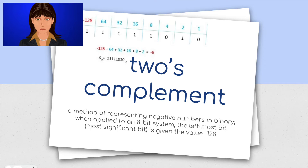Two's complement: a method of representing negative numbers in binary. When applied to an 8-bit system, the leftmost bit, the most significant bit, is given the value minus 128.